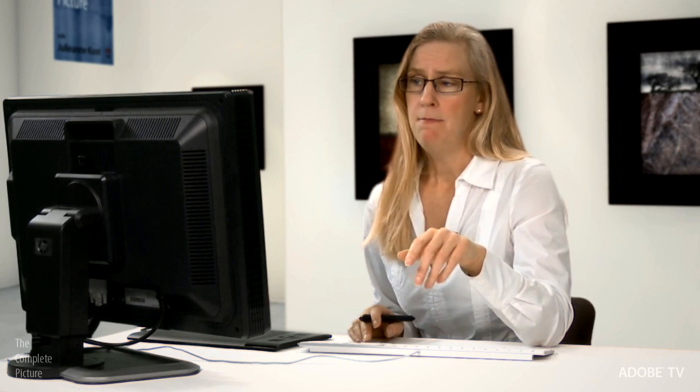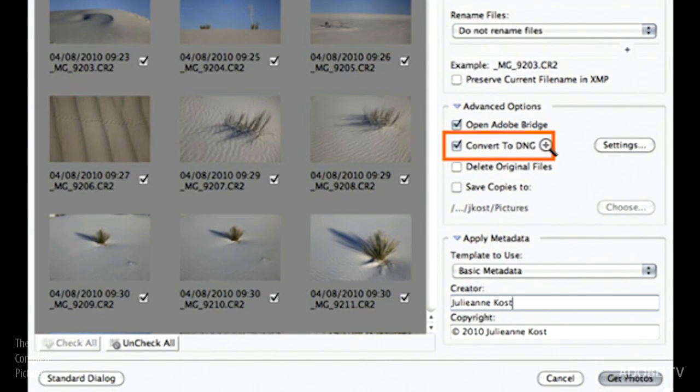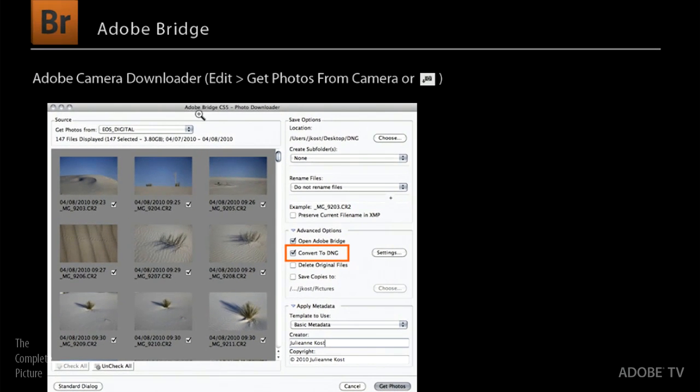So that's Lightroom. If you're using Bridge instead, you can download using the Adobe camera downloader. You can download your images from the camera. And you can see right here that you can convert to DNG. And if you've never used this, it's really easy. You just go under the Edit menu, and you say Get Photos from Camera. Or there's a little icon that you can just click in Bridge, and it will bring up this dialog box where you can convert to DNG.